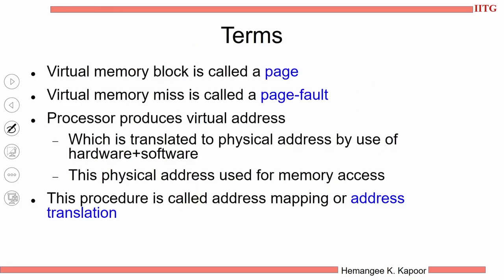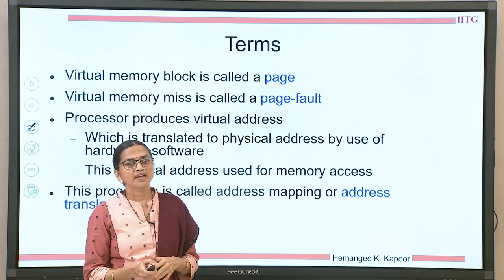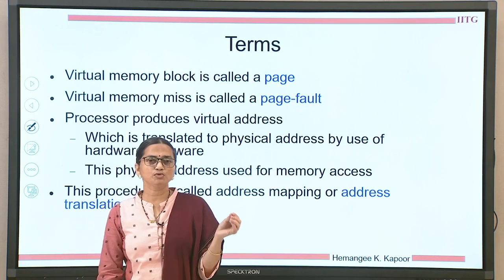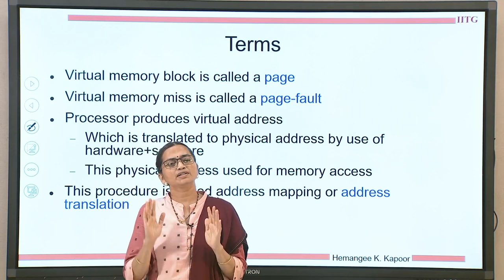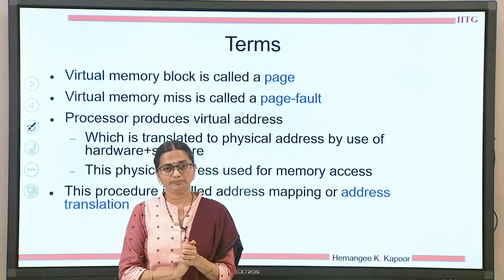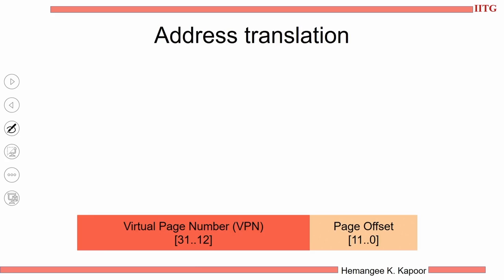Some terminologies related to virtual memory: in cache, every block brought was called a cache block or cache line, whereas in virtual memory a block is called a page. If you miss in virtual memory — that is, if a particular page is not loaded in the RAM — we call it a page fault, as opposed to a cache miss. The processor produces the virtual address, which must be translated to the physical address with the help of both hardware and software. This process is called address mapping or address translation.